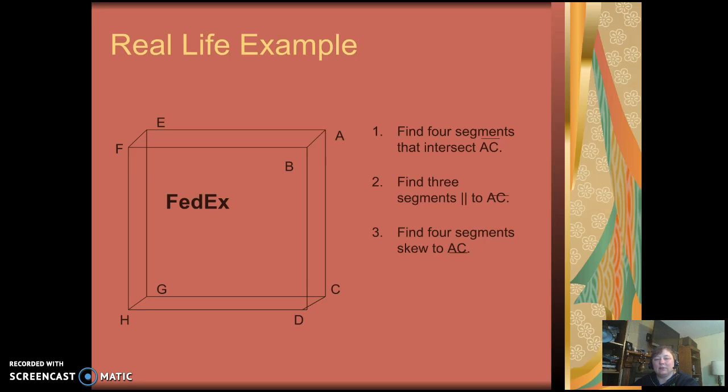Alright, so we need to find three segments that are parallel to AC. Here is AC again. Parallel, they have to be on the same plane. So BD is the first one that could be on the same plane as AC.